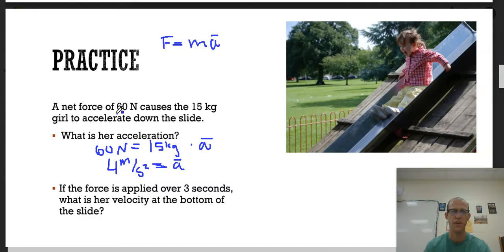There is one significant figure here, two here. So when I divide them, I should have an answer of only one. If the force is applied over 3 seconds, what is her velocity at the bottom of the slide? We need to bring back our kinematic equations. We are having a little girl at rest go down a slide. At 0 seconds, she is traveling at 0 meters per second.